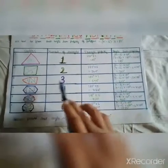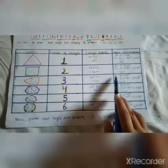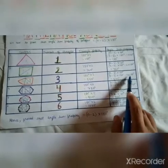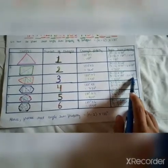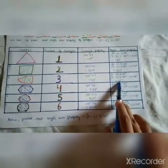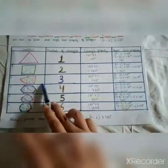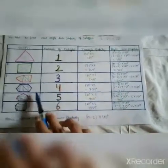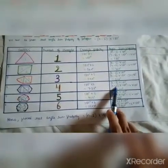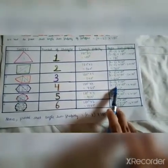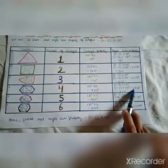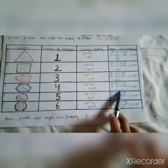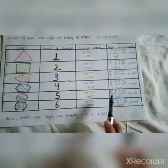The number of sides in a pentagon are 5, so 5 - 2 = 3, and 3 × 180 = 540 degrees in a pentagon. The number of sides in a hexagon is 6, so 6 - 2 = 4, and 4 × 180 = 720 degrees in a hexagon.